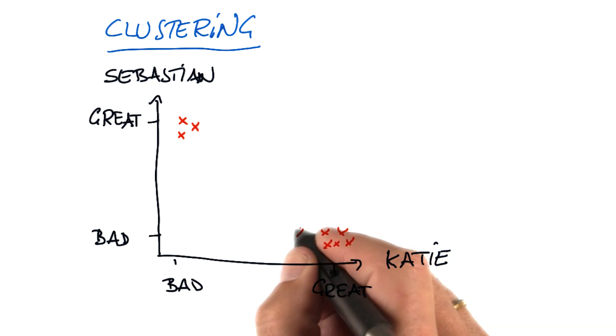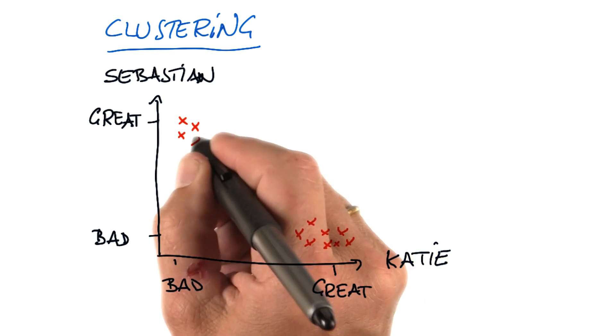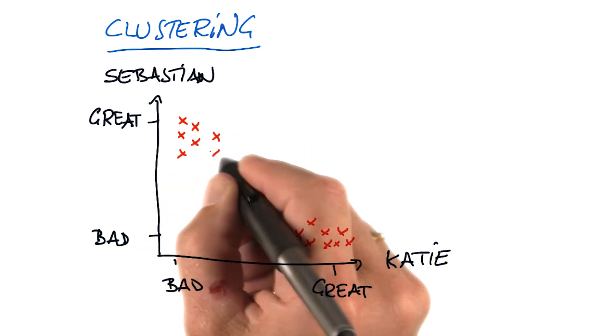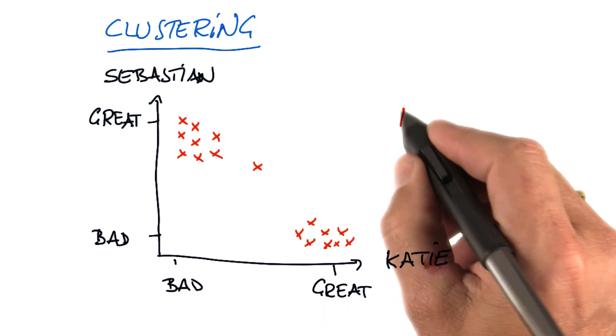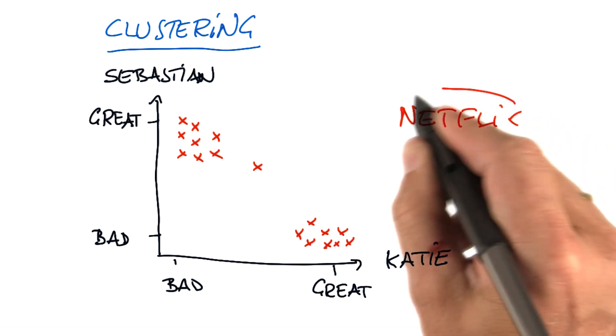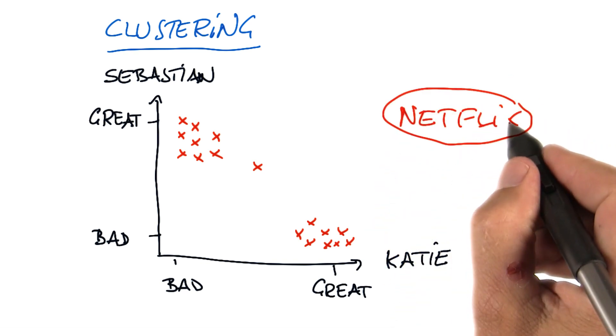So somewhat exaggerated, it might end up that our movies fall into different classes, depending on who likes which movies. So say you're Netflix, and you look at both my queue and Katie's queue, and you graph it like that.